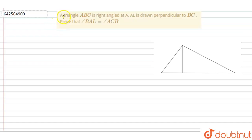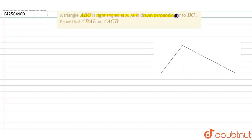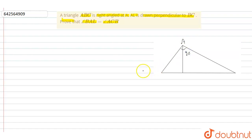Hello everyone, let us look at the following question. The question says: triangle ABC is right-angled at A and AL is drawn perpendicular to BC. We have drawn a figure — this is A, that is the right angle, 90 degrees, this one is B, here is L, and it is C.